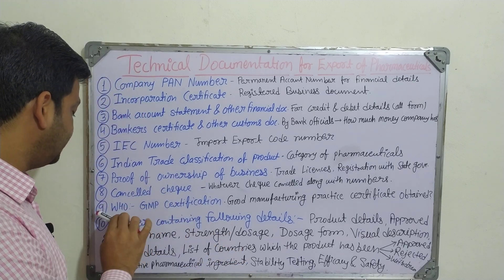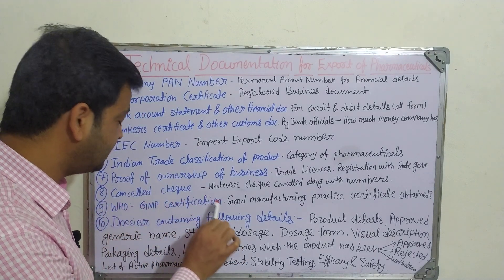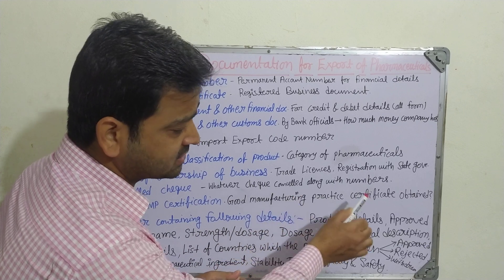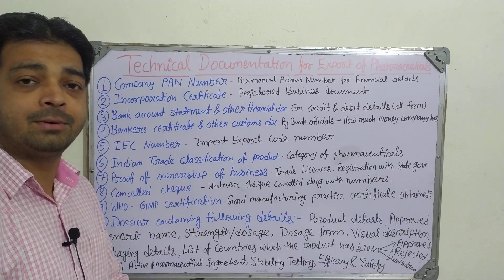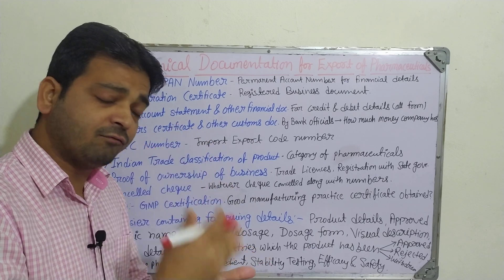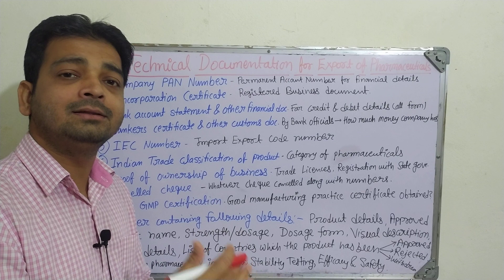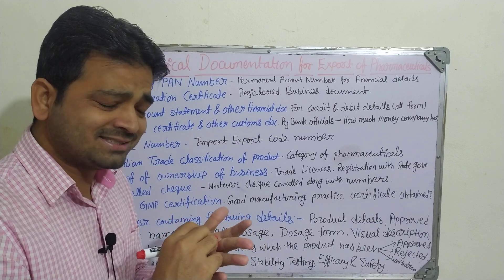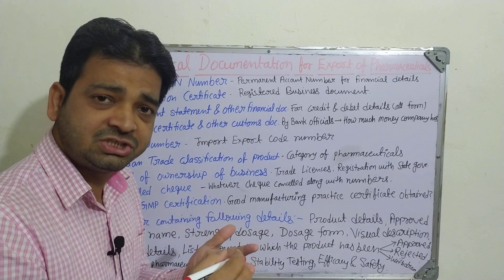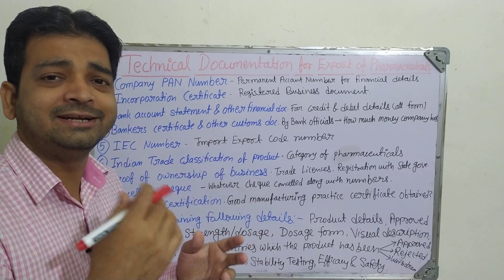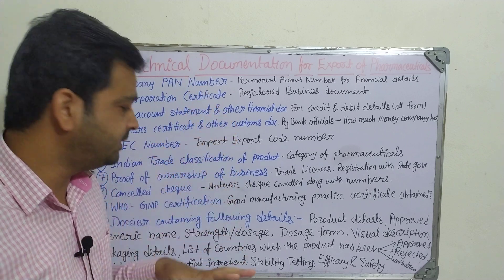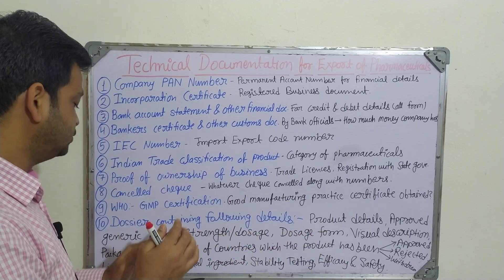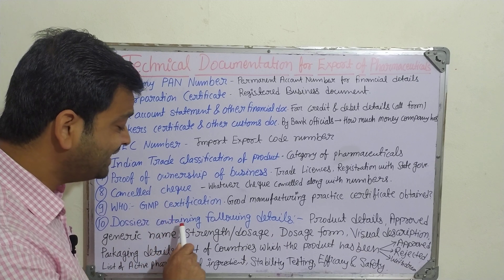The ninth one is the WHO GMP Certification — the World Health Organization's Good Manufacturing Practice certificate. When manufacturing a pharmaceutical product, whether you are maintaining Good Manufacturing Practice or not — including water quality, space provided, sterilization, fumigation, air ventilation, humidity, and temperature control — there is a long list of GMP parameters that must have been maintained during production.